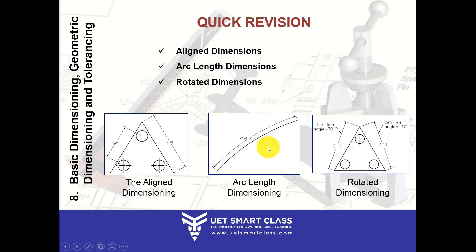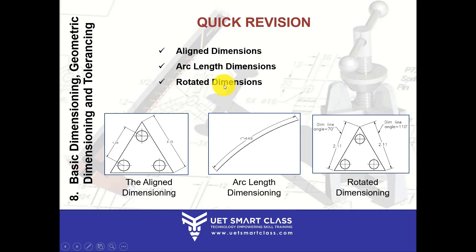Then arc line dimensioning — you can specify the dimensioning of arcs as well. If the arc is greater than 90 degrees at its center, it will also show a leader; otherwise, it will just show the arc symbol and the text, which is the dimension of your arc. And then rotated dimension, which I also discussed in the previous module — the dimension line can be rotated at a particular angle specified by you.